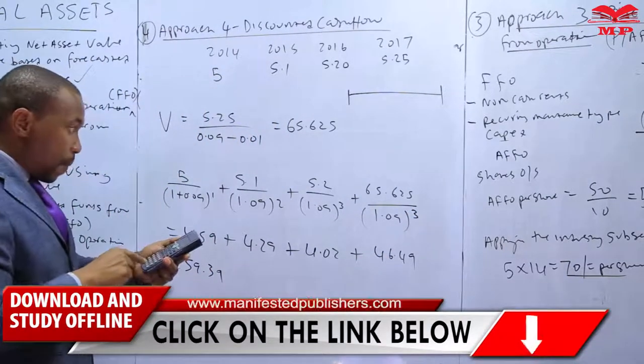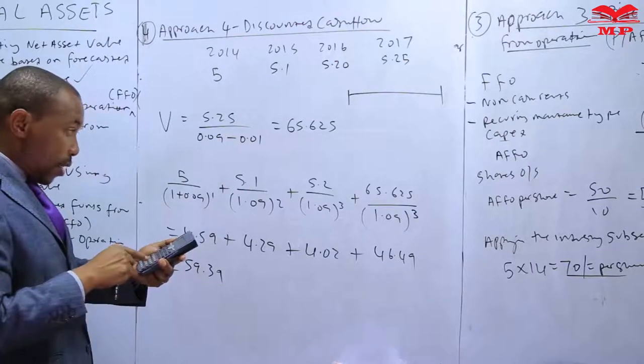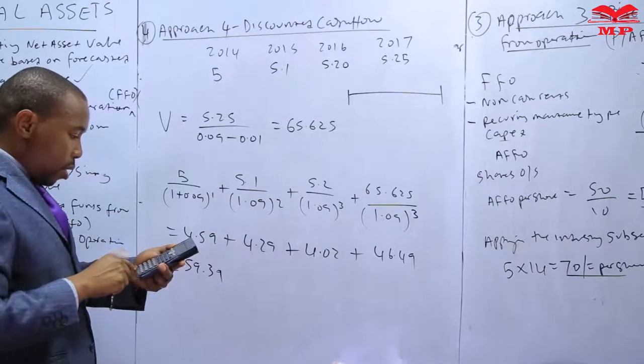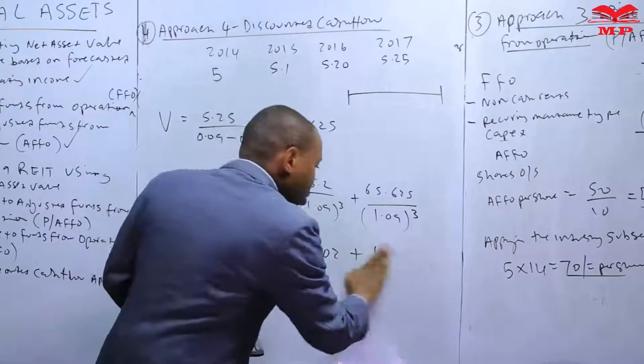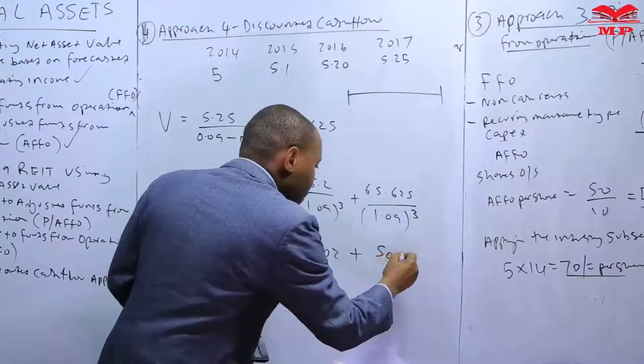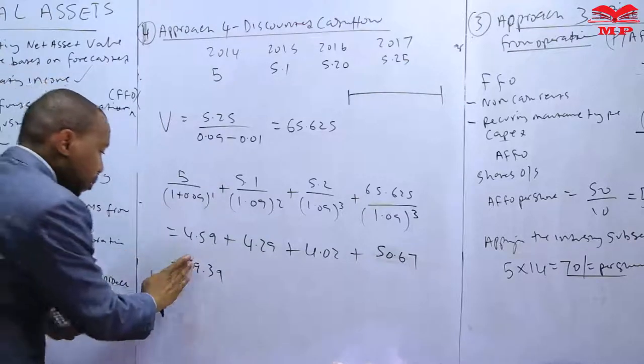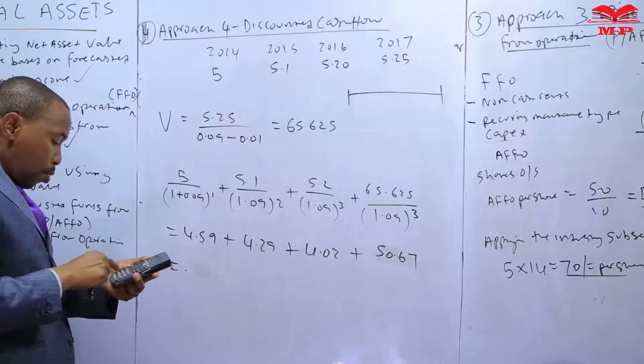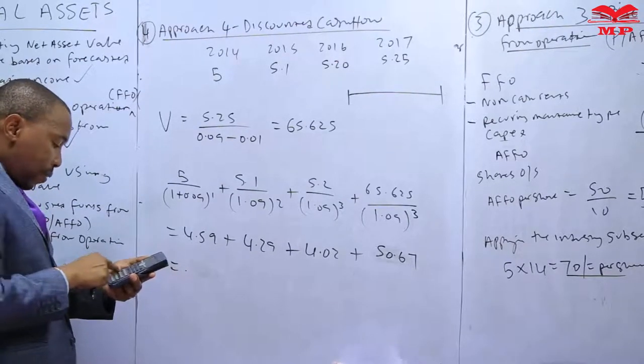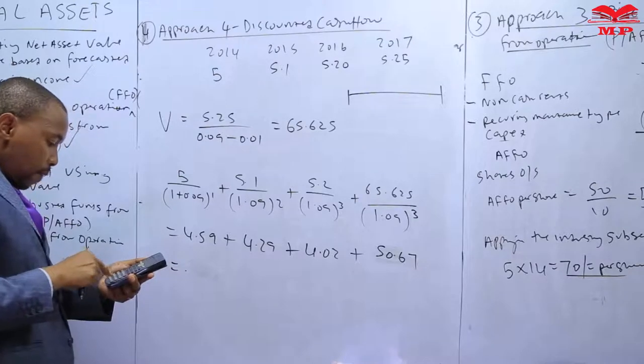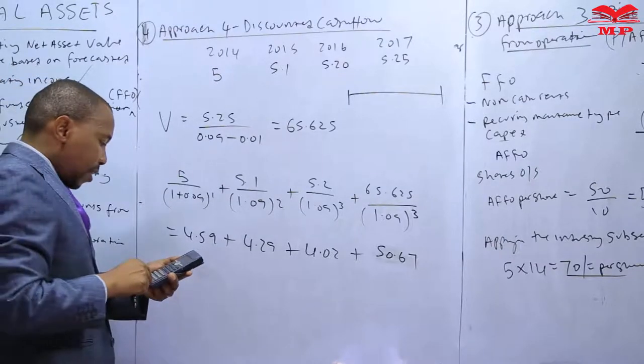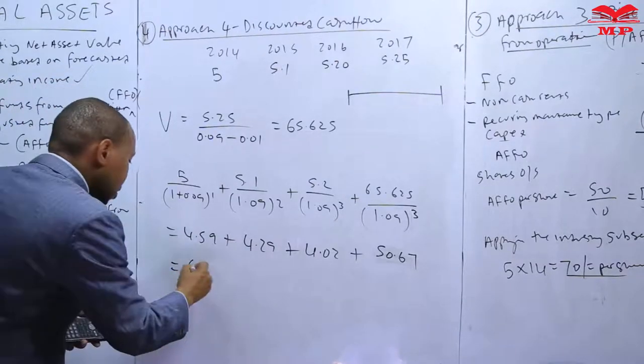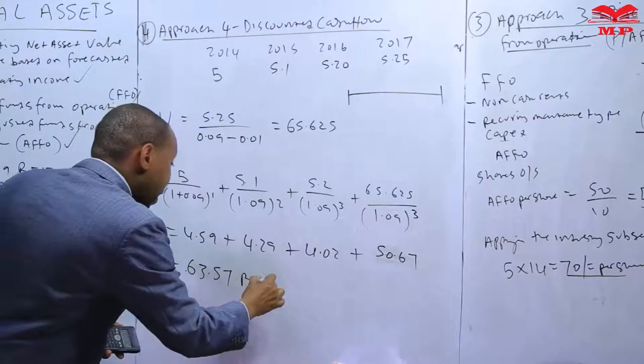Please note that this should be power 3, not power 4. So it should be 65.625 divided by 1.09 power 3, which is 50.67. Let me recalculate: 50.67 plus 4.02 plus 4.29 plus 4.59, which gives us 63.57. Let me double check again. Yes, it is 63.57, 63.57 per share.